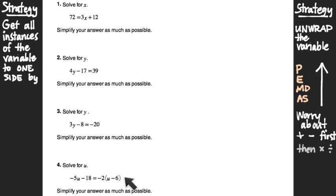What makes problem 4 more challenging? We're going to have to combine like terms at some point. One of the things we noticed is that there's more than one place where our variable appears in this equation — there's a negative 5u on the left-hand side, and there's a u inside parentheses on the right-hand side. So the variable is in two different places.